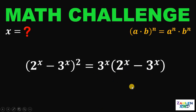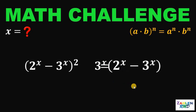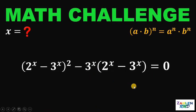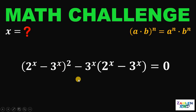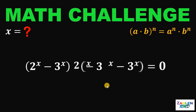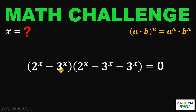Let's equate this equation to 0. Notice that we have another common factor of 2 raised to x minus 3 raised to x. So we can factor out that common factor from both terms. If we do that, we get 2 raised to x minus 3 raised to x, multiplied by 2 raised to x minus 3 raised to x.